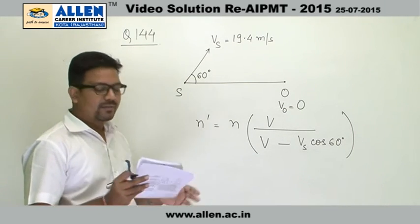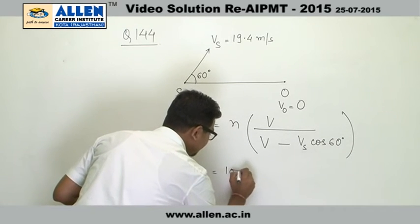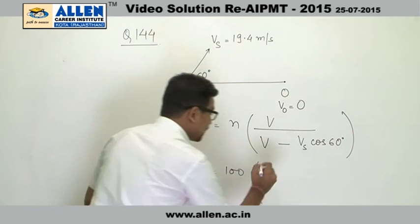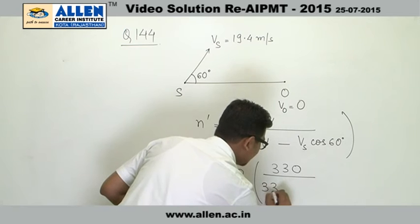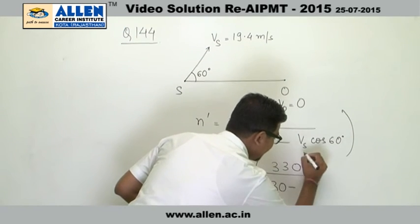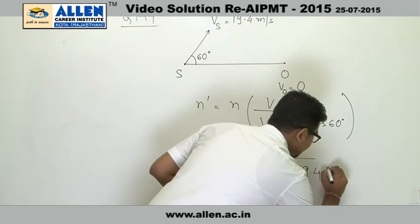Now substituting the values as given, n is equal to 100, v is equal to 330 as given, divided by 330 minus vs as given 19.4, and cos of 60 is half.